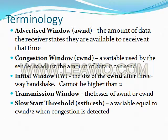Before discussing the algorithms, here is some basic terminology. The advertised window is the amount of data the receiver states they are available to receive at that time. The congestion window is a variable used by the sender to adjust the amount of data it can send. The initial window is the size of the congestion window after the three-way handshake and cannot be higher than two. The transmission window is the lesser of the advertised window or the congestion window. The slow start threshold is a variable equal to the congestion window divided by two, initiated when congestion is detected.